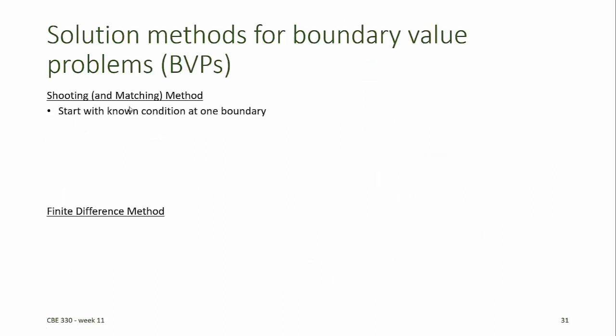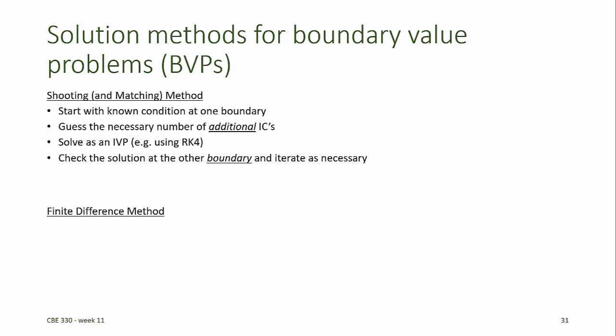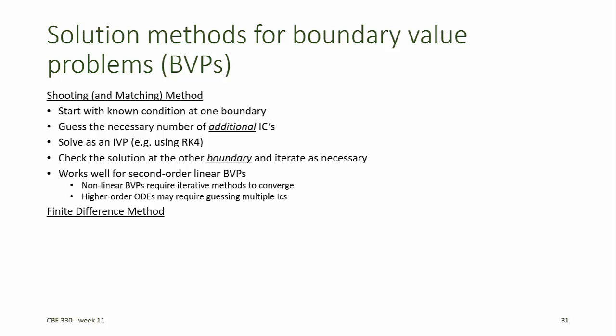The solution methods we've looked at for boundary value problems include the shooting method, in which we start with a known condition at one boundary, guess the necessary number of additional initial conditions, and use an IVP solution method to predict the solution all the way across the domain. Then we check the solution at the other boundary to see if we've matched the boundary condition, and iterate as necessary to achieve convergence. This works particularly well for second order linear boundary value problems. Nonlinear boundary value problems require an iterative method, and higher order ODEs or systems of ODEs with more than two independent variables will also require guessing multiple initial conditions.